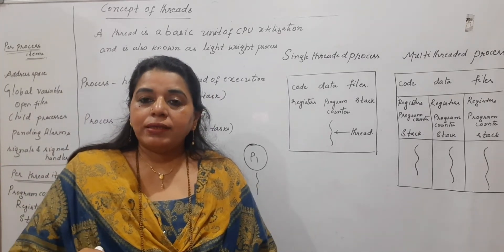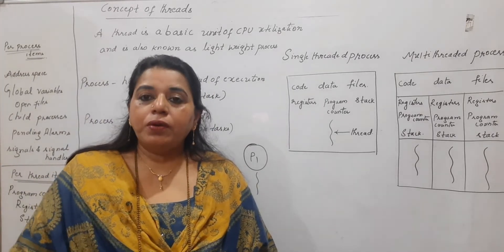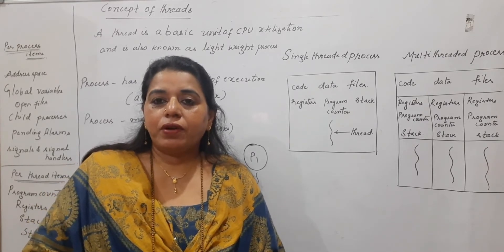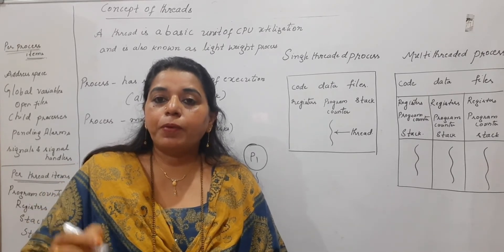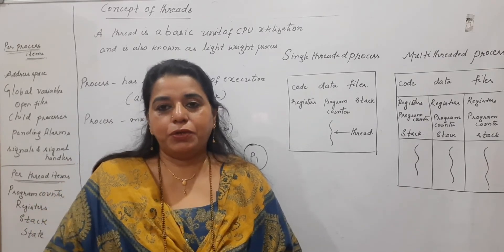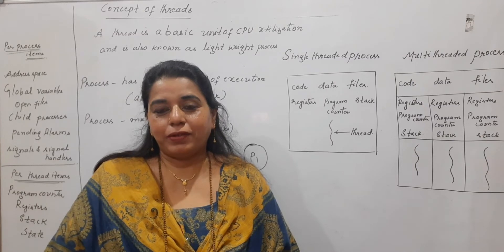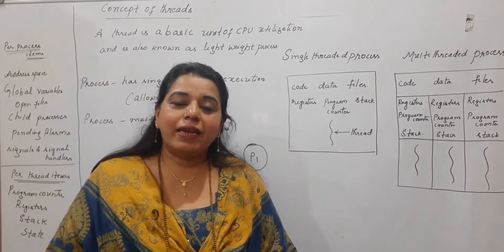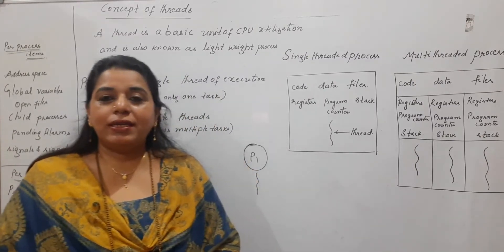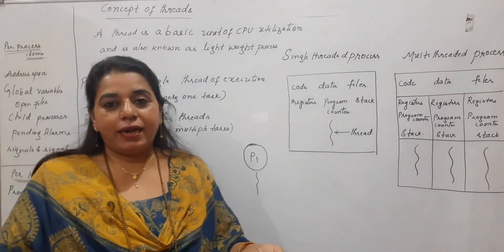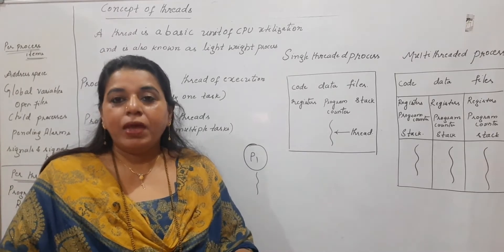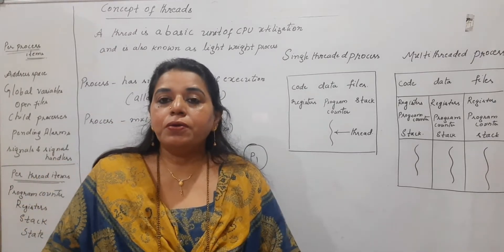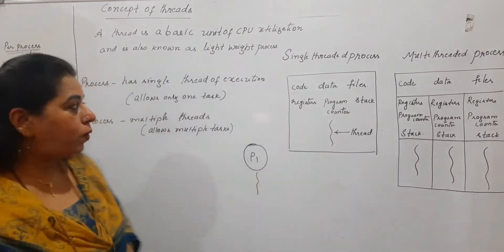If you try to recall the definition for the process, a program in execution is called a process. So once a process is created, what actually happens is the process gets the address space. The process has to use the different code, data, global variables,